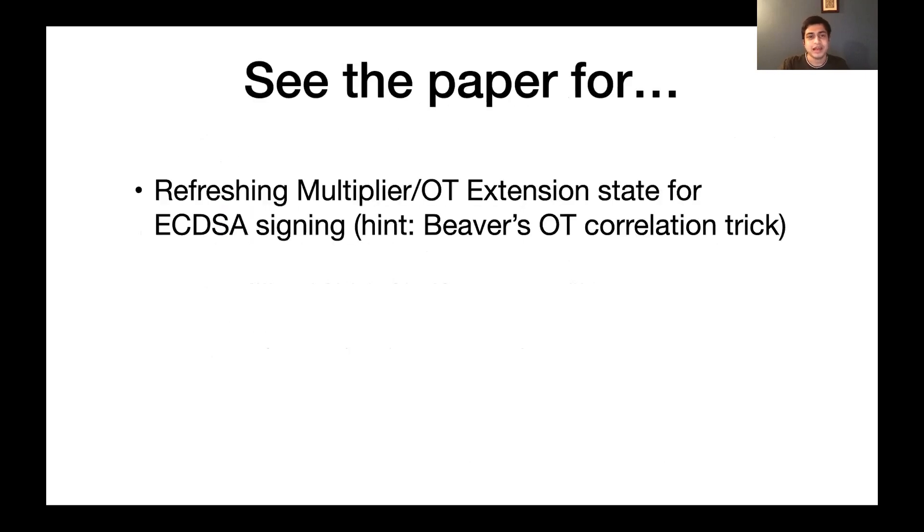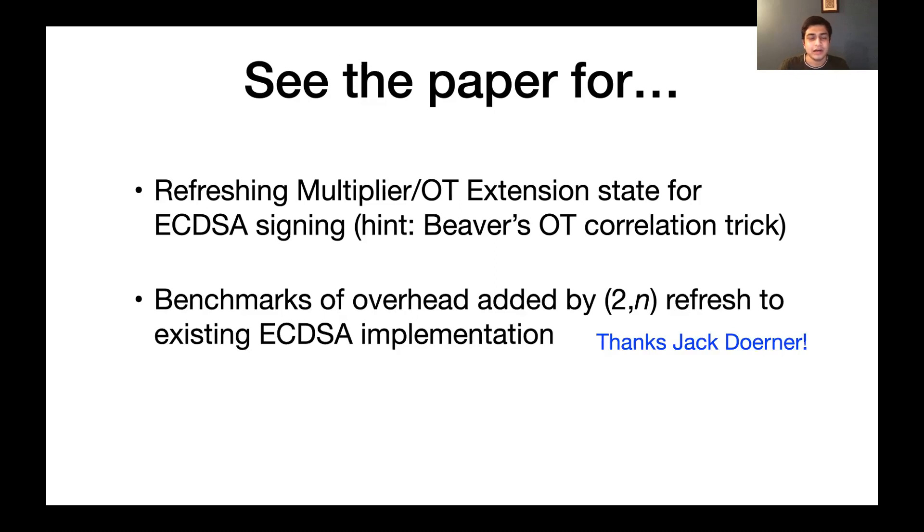Additionally, the paper, as I said, has more details on how to construct the machinery to refresh the rest of threshold ECDSA. If you're familiar with Beaver's trick for randomizing OT correlations, that's how we do it. And also, we have more detailed benchmarks for threshold ECDSA. And there's a lot of nuance in finding the correct definition, which we discussed in the paper. And of course, we have proofs for all of these statements.